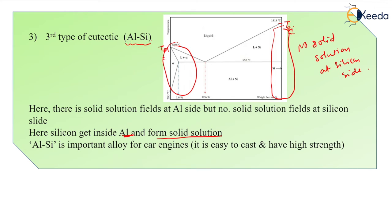The famous example is aluminum silicon alloy, which is very important in car engines. It is very easy to cast and has very good strength. This is most popularly used alloy in the automotive sector or automotive industries.